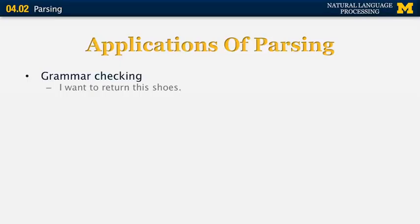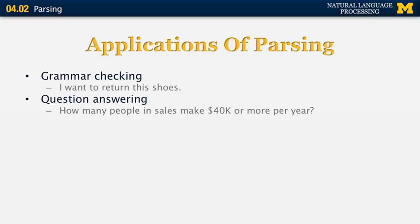Let's look at applications of parsing. The first is grammar checking — every time you go to your favorite editor, if you type an ungrammatical sentence, you'll see it underlined with a chance to correct it. For example, 'I want to return this shoes' would be flagged and corrected to 'these shoes.' Another application is question answering: a question like 'how many people in sales make $40,000 or more per year?' requires a parser to recognize that you're looking for a database record about a person with salary as an attribute.